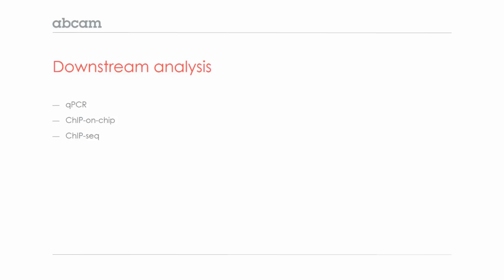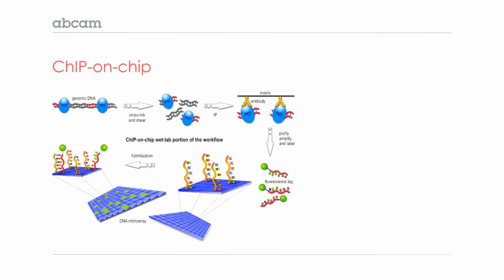Chip-on-chip and chip-seq allow you to perform chip on a genome-wide scale. In chip-on-chip, the chip procedure is carried out as it normally would be until after the DNA is purified. At this point, the immunoprecipitated DNA is amplified and labeled fluorescently.